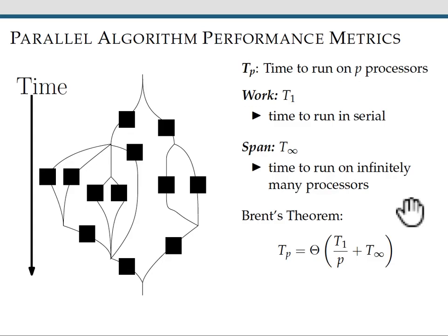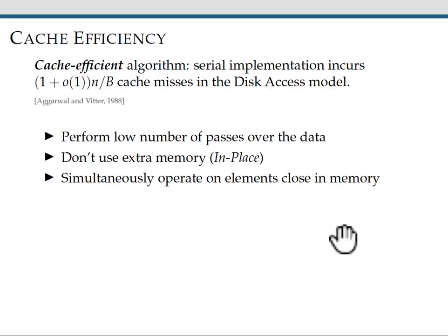Now let me tell you how we determine how good a parallel algorithm is. So tp, the time to run on p processors, is a very important metric. Two special cases are work t1 and span t∞. Brent's theorem says that the work and the span of an algorithm together determine its performance on p processors for all p. Another important metric, which is also going to play a role in determining how fast our algorithm is in practice, is cache efficiency.